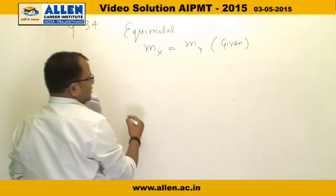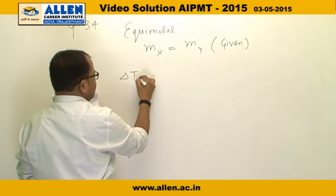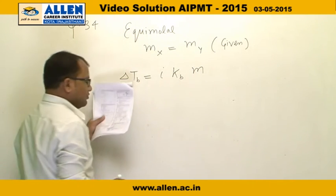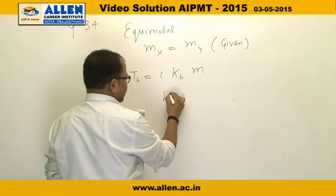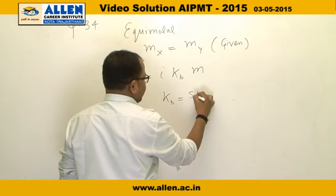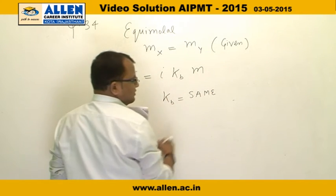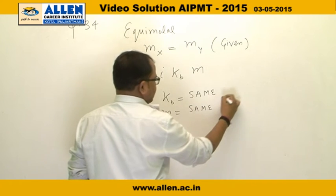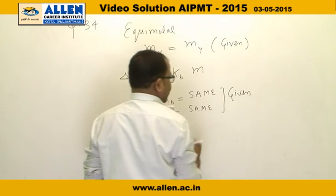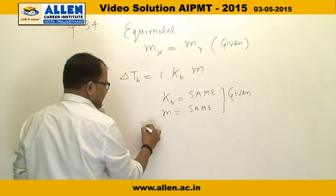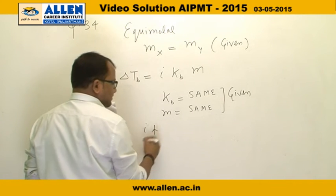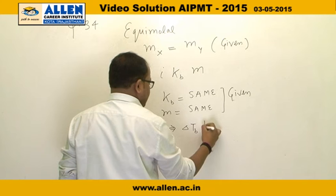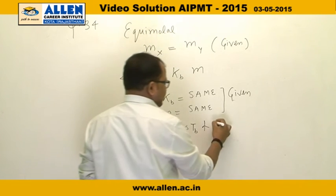ΔTb equals i×Kb×m. For both solutions, Kb is the same and molality m is the same as given. That means the only difference is in i. When i is greater, ΔTb is greater, so Tb is greater.